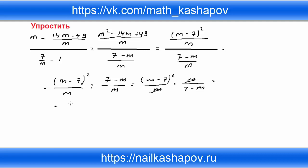m сокращается, остаётся (m минус 7)² делённое на (7 минус m). Обратим внимание: в числителе m минус 7, а в знаменателе 7 минус m — они отличаются знаками. Значит, я могу вынести минус за дробь: знаки меняются, минус m становится с плюсом, а плюс 7 становится с минусом.